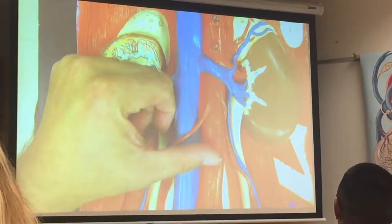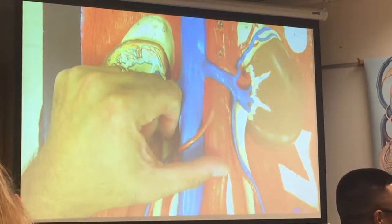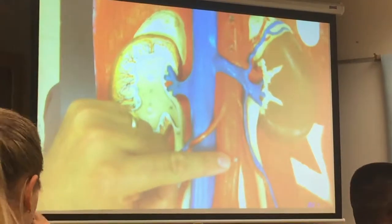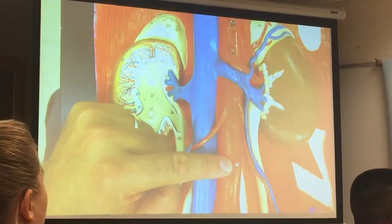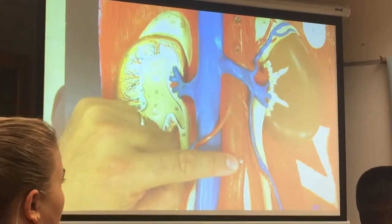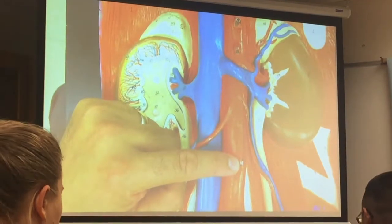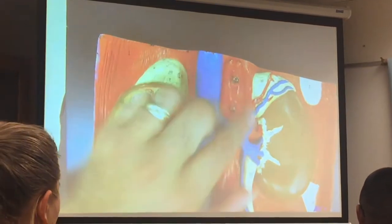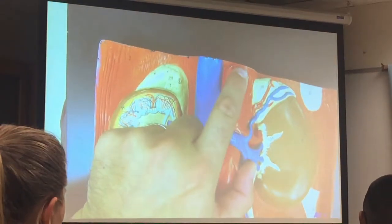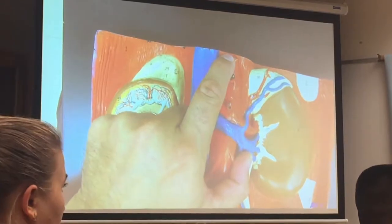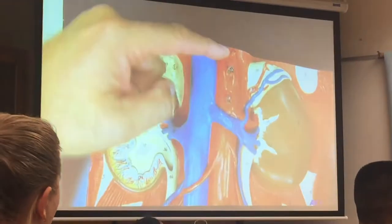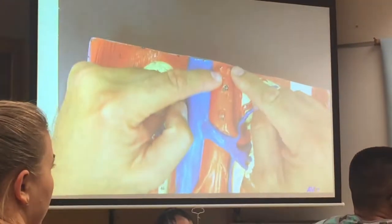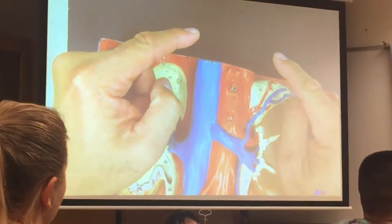And what's the last unpaired one down here? Inferior mesenteric artery. What kind of structures does that go to? Large intestine — sigmoid, rectum, things like that. And then the abdominal aorta — what are these paired vessels that come up like antennae going right underneath the diaphragm? Those are your right and left phrenic arteries.